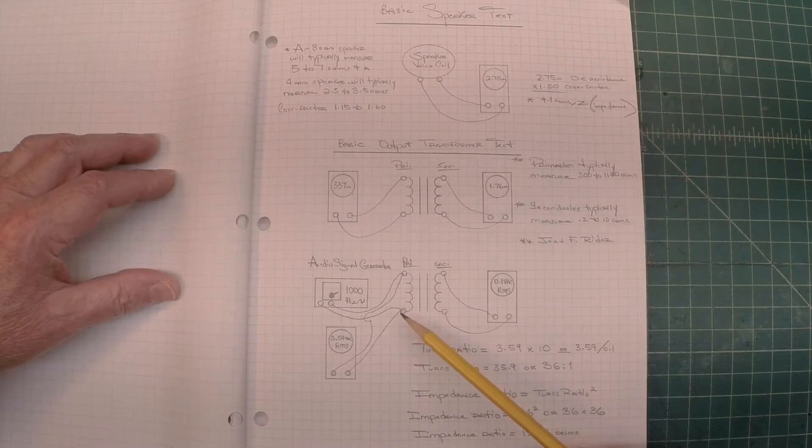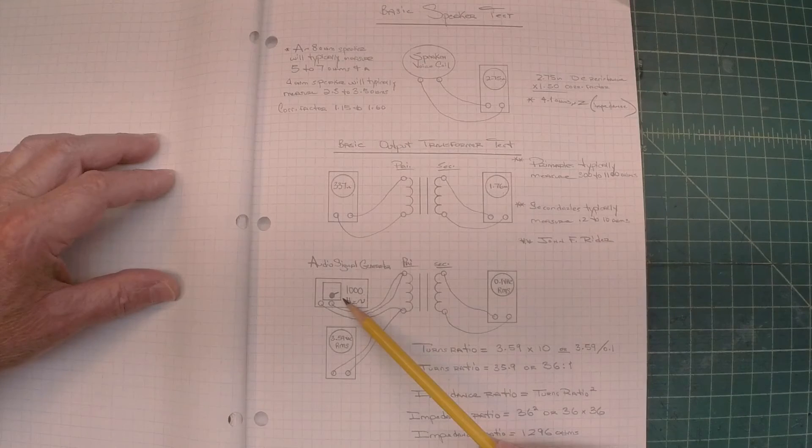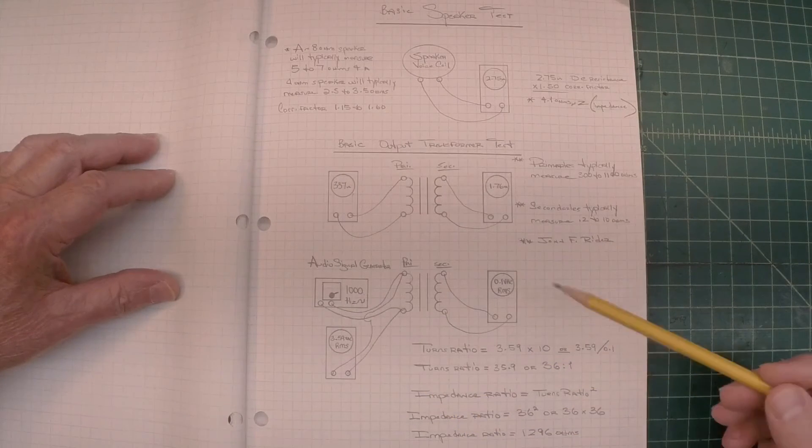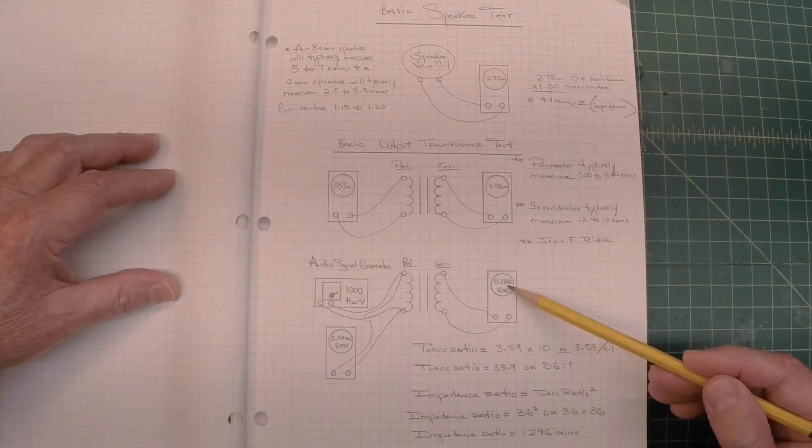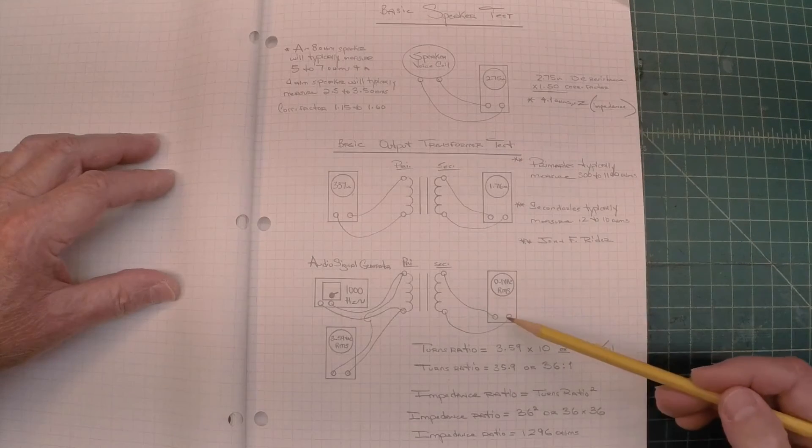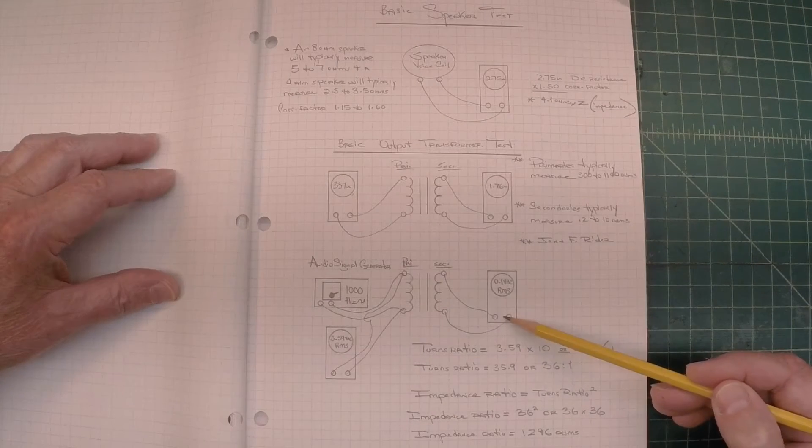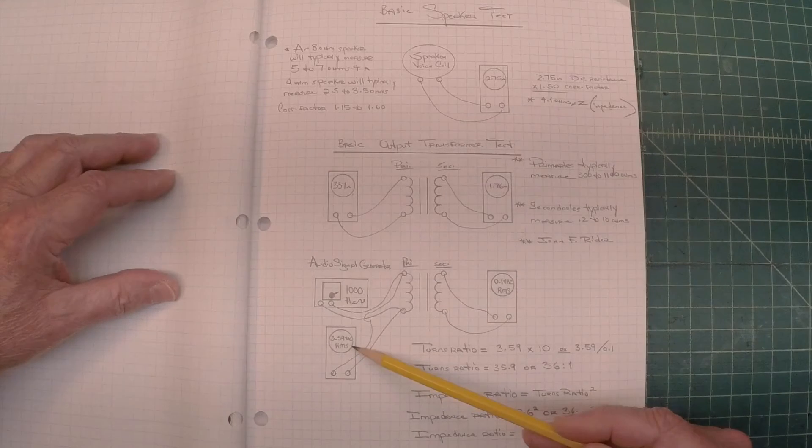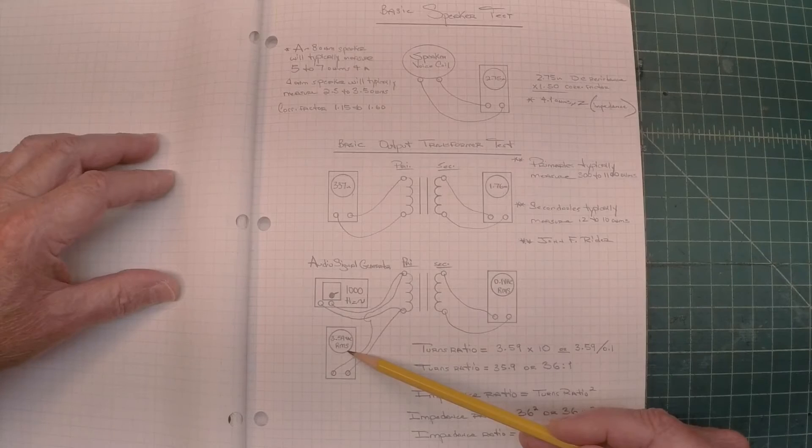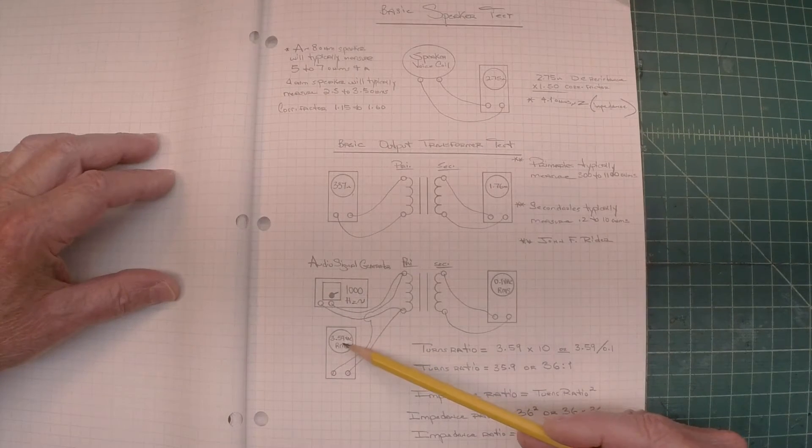And all I do is adjust the attenuation of my audio signal generator to measure 0.1 volts AC RMS on the secondary side. Once I achieve that, I just go back and read the primary voltage AC RMS, and you can see in this case, I read 3.59 volts.